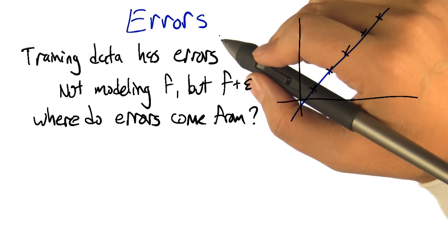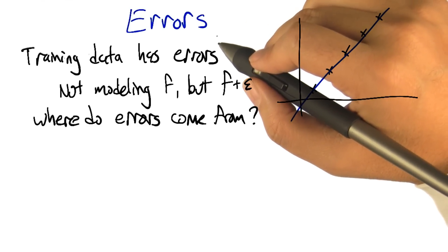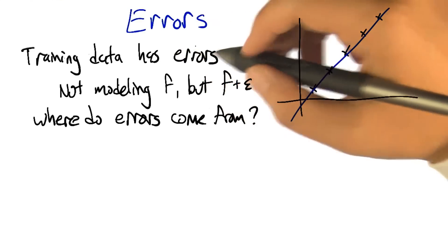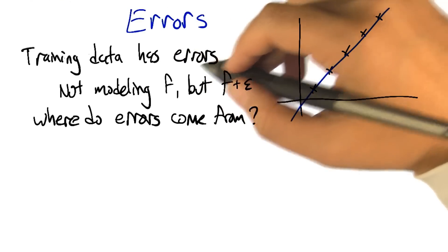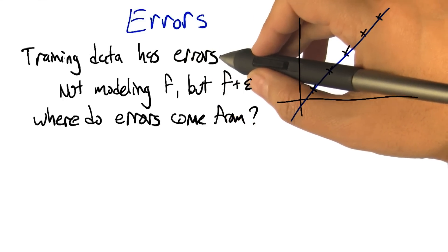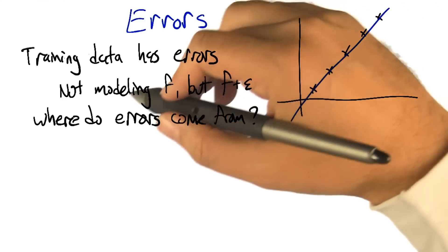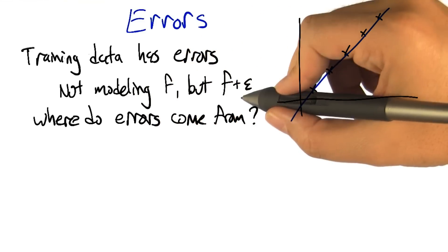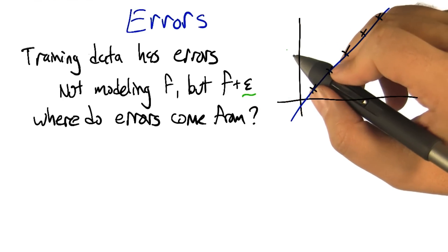Now part of the reason that we can't just solve these kinds of problems by solving a system of linear equations and just being done with it, the reason we have to do least squares is because of the presence of errors. The training data that we are given has errors in it. And it's not that we're actually modeling a function, but the thing that we're seeing is the function plus some error term on each piece of data.